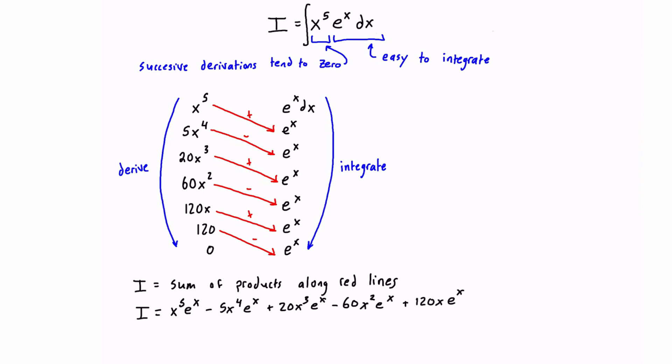Then the last one is negative: minus 120 times e to the x. At this point you should add in the plus C for the arbitrary constant. There would be an arbitrary constant from each term, but they would all just add up together and basically get reduced back down to one single arbitrary constant, so I just like to add it in at this point.